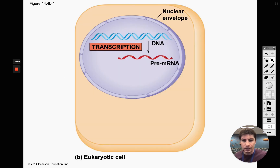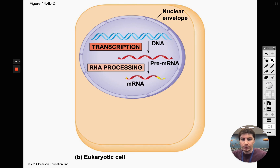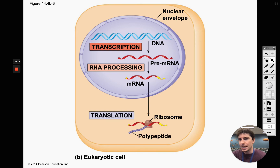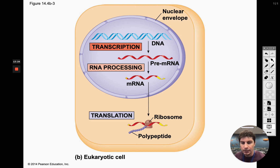For eukaryotic cells: DNA is converted to mRNA in the nucleus, then the mRNA leaves the nucleus, goes to a ribosome, and while on that ribosome amino acids are assembled. Those amino acids connect to make a polypeptide chain, and once the polypeptide grows large enough it becomes a protein.